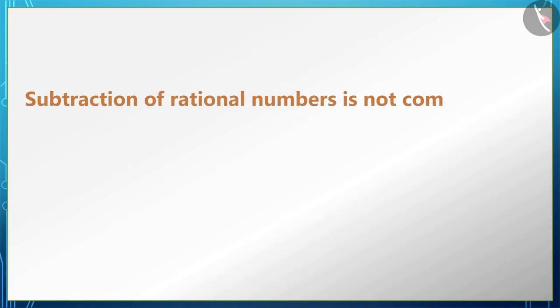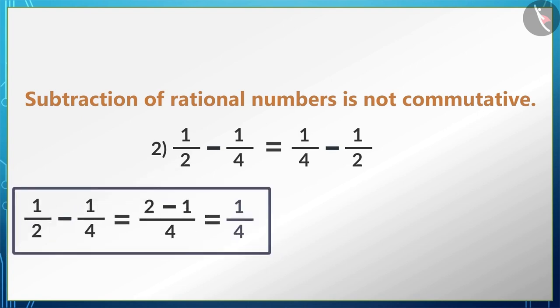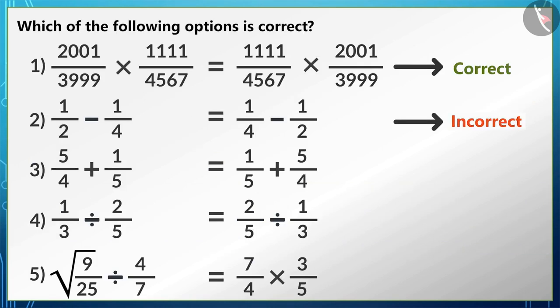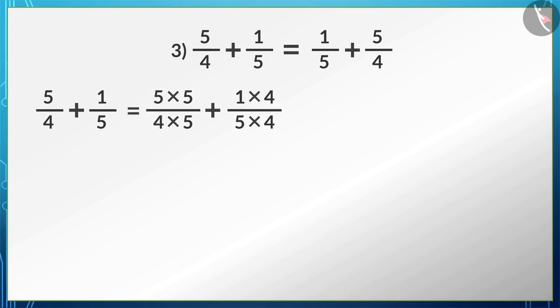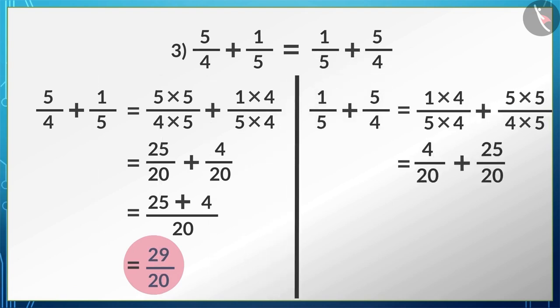Sir, the second option is wrong because the subtraction of rational numbers is not commutative. We can see here the answer on the LHS is 1/4 and the answer on RHS is -1/4. But sir, the third option is correct. The answer on LHS is 29/20 and the answer on RHS is also 29/20.